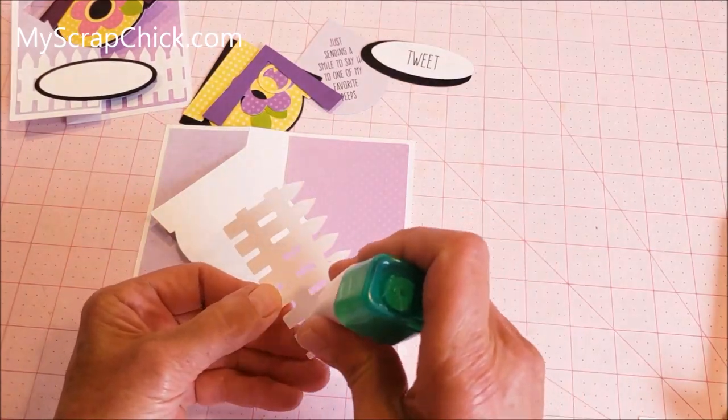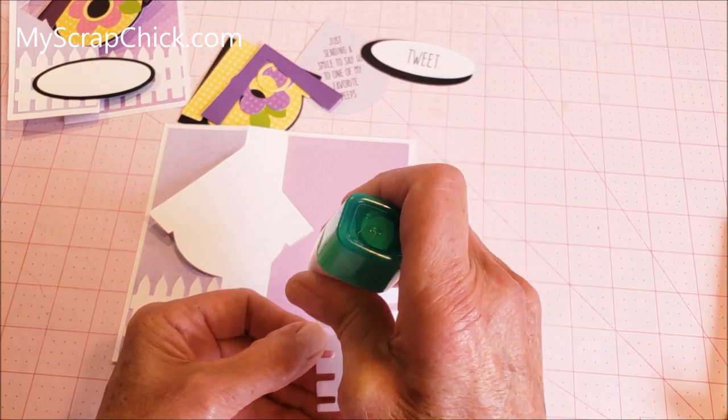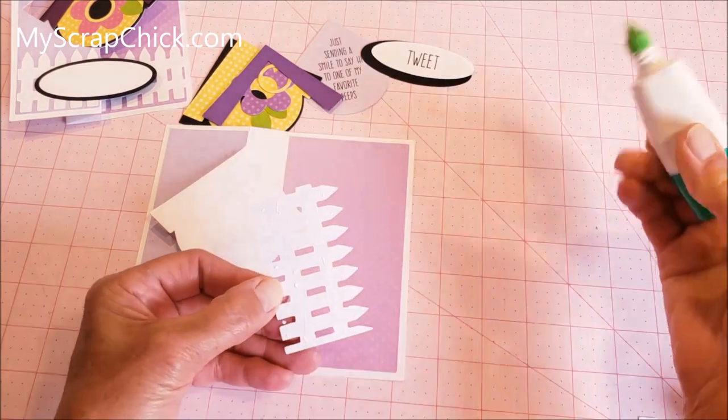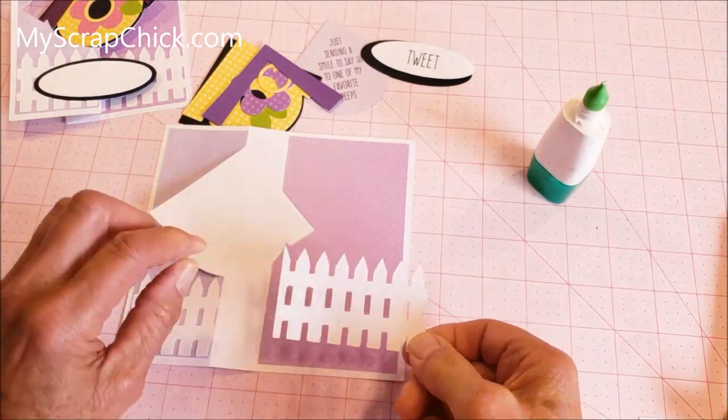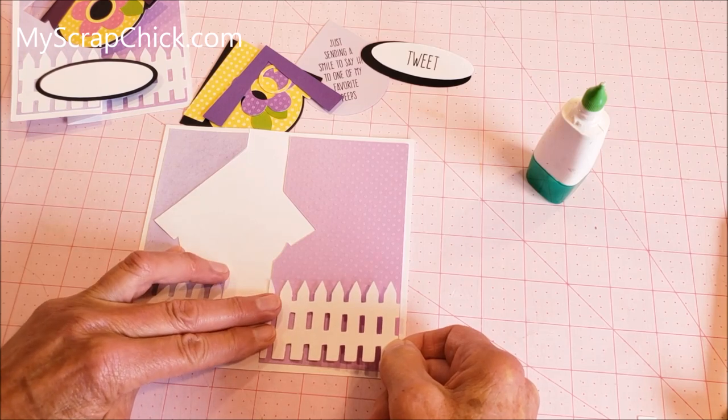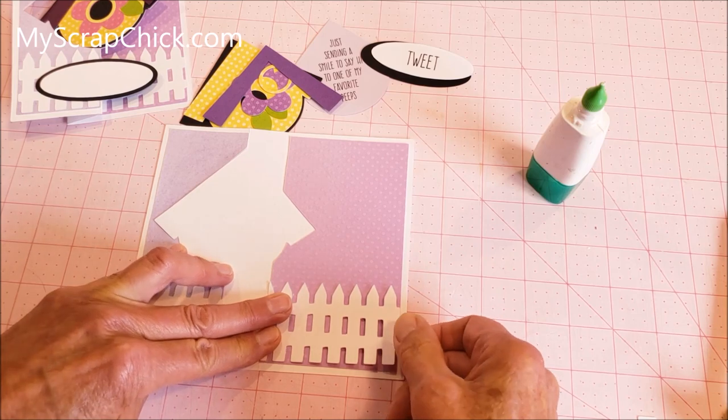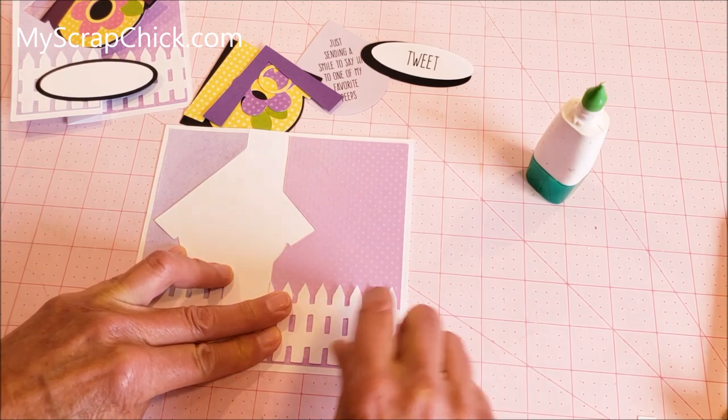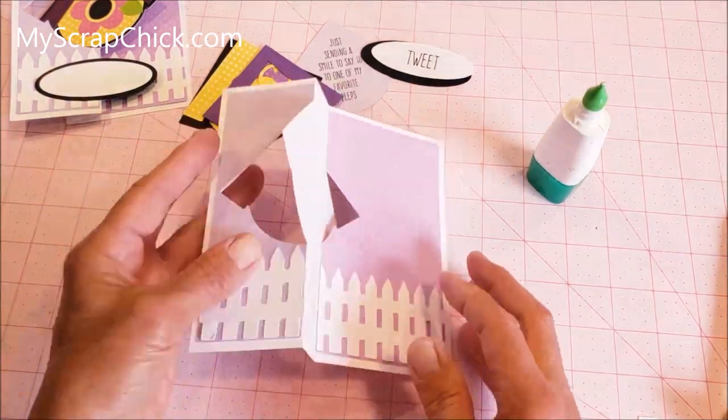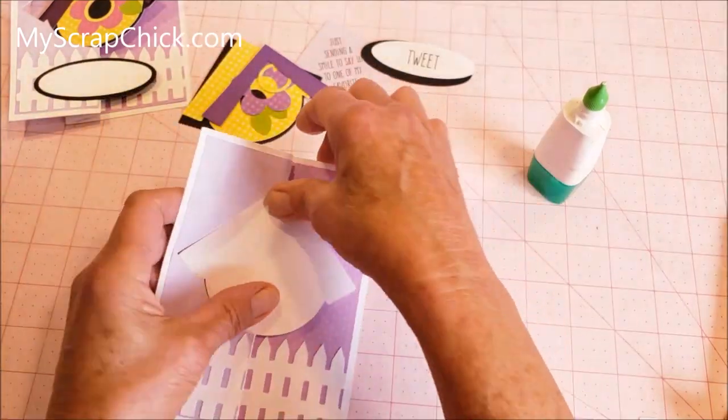Then I made another fence piece that goes on the inside. This shorter fence post will line right up along the cut side. Press that down and then when it's closed, it'll look like this.